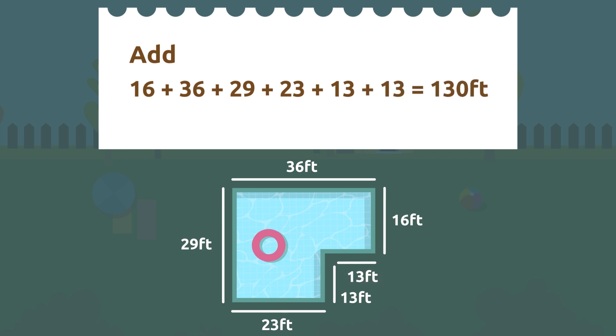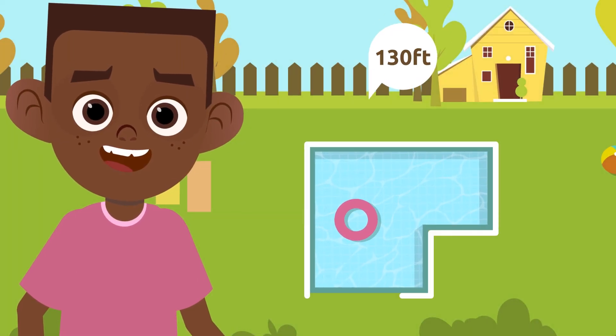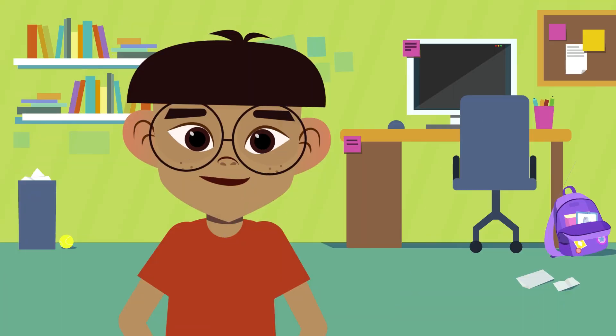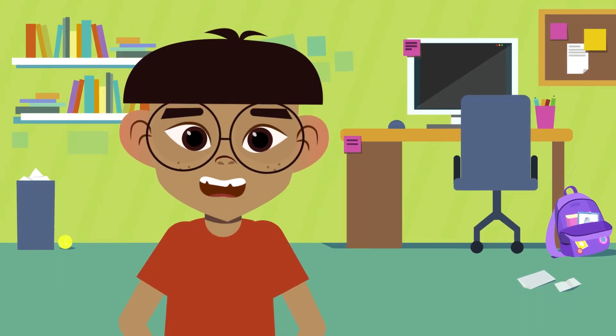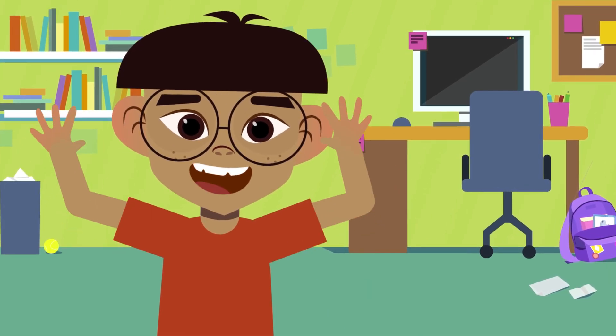Amazing! John needs to buy 130 feet of white tape to glue around his pool. As you have seen, knowing how to find the perimeter is very important and also very simple.